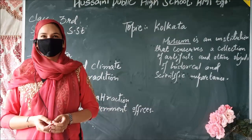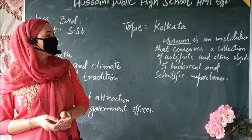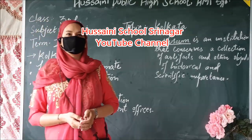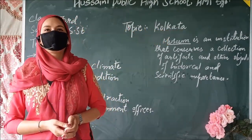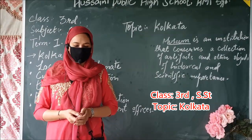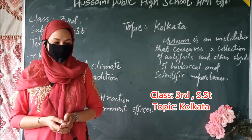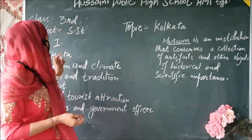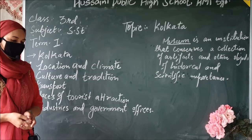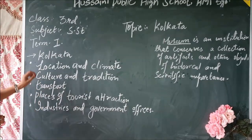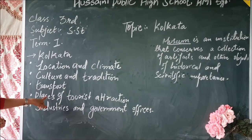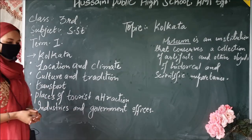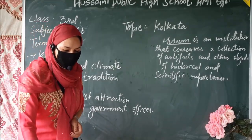Assalamu alaikum warahmatullahi wabarakatuh. Welcome to Hussaini Public High School online classes. Dear students, I hope you all are fine by the grace of Almighty Allah. I am your SST teacher and I am going to teach you lesson number 7 of term first. Today my topic is about Kolkata. We will learn about its location and climate, culture and tradition, transport, places of tourist attraction, industries and government offices. We will discuss one by one.